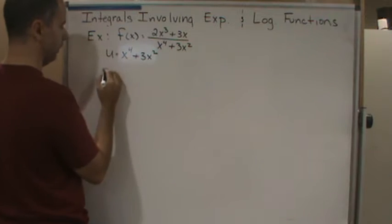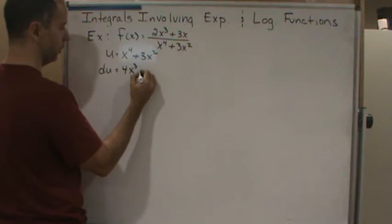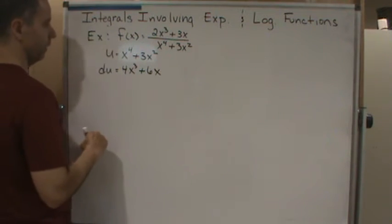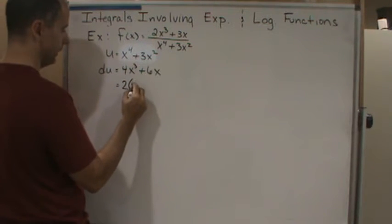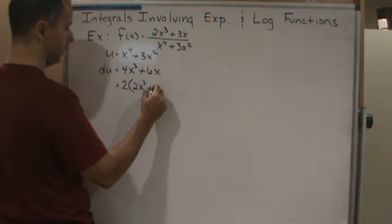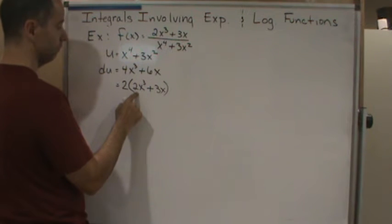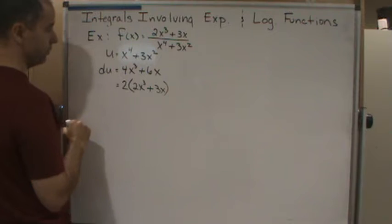That means du would equal 4x cubed plus 6x. Now look at this, I can factor out 2 and that gives me 2 times 2x cubed plus 3x. And there it is, I got my u in here, I've got my numerator.